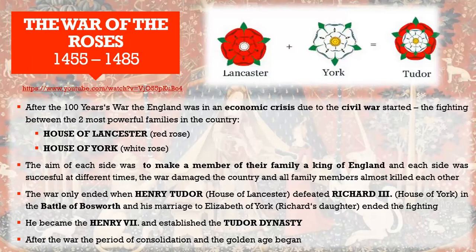This conflict happened after the Hundred Years' War, which actually took more than 100 years — exactly 116 years. After that war, England was in an economic crisis, and this is when the civil war started: the War of the Roses. After every war, both sides are usually devastated because they lose a lot of people.